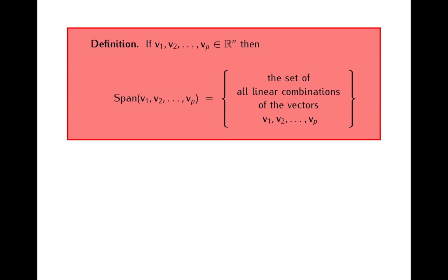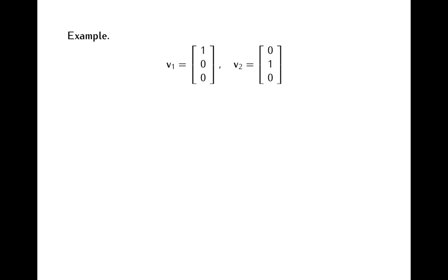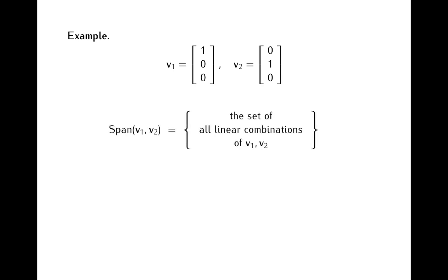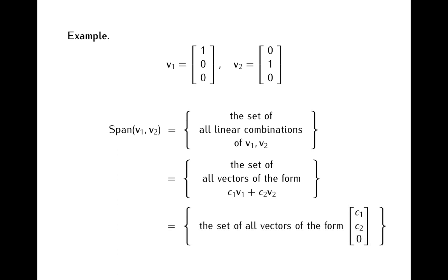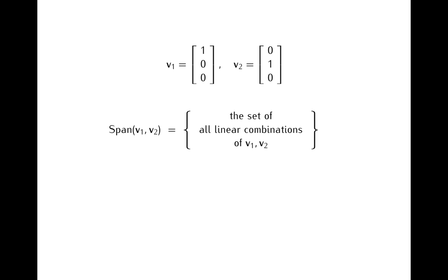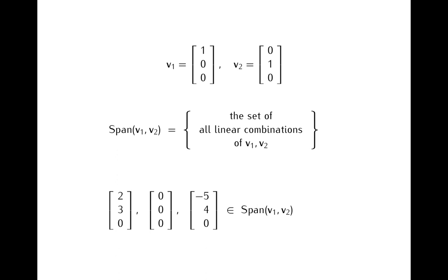To illustrate this definition, let's look again at the vectors v1 and v2. By definition, the span of these two vectors is the set of all linear combinations of these vectors — equivalently, the set of all vectors of the form c1 times v1 plus c2 times v2, where c1 and c2 are some real numbers. As we previously noticed, this set is the same as the set of all vectors whose first and second coordinates are arbitrary numbers and whose last coordinate is 0. The span of v1 and v2 consists of infinitely many vectors, and here are a few concrete examples of vectors that are in the span.